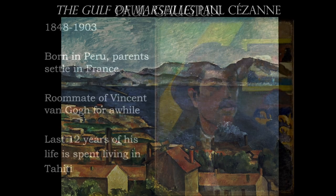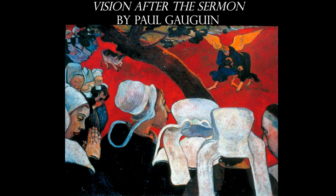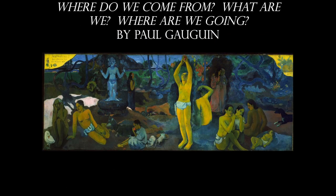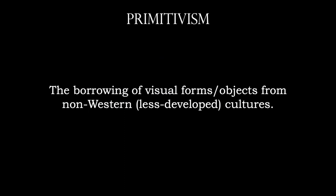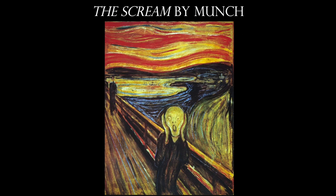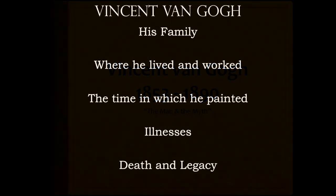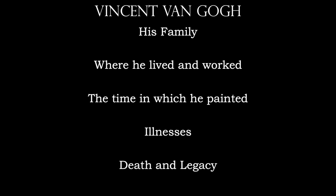Gauguin dealt with primitivism and expressive uses of color, incorporating non-Western material — such as figures from Tahiti — into his artwork. This is considered the borrowing of visual forms and objects from non-Western cultures. Edvard Munch is also categorized as a Post-Impressionist because of his use of color. We also spent a lot of time on Van Gogh — make sure you're familiar with his family, the three cities he lived and worked in, the time in which he painted, his illnesses, and his death.